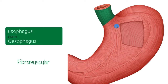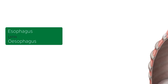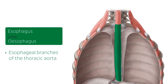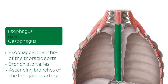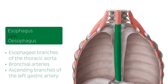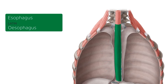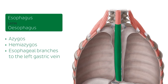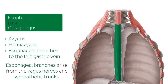Here we can see the inferior portion of the esophagus that connects to the stomach. The esophagus is supplied by the esophageal branches of the thoracic aorta. It's also supplied by the bronchial arteries and the ascending branches of the left gastric artery. The venous drainage is provided by small vessels returning blood to the azygos and hemiazygos veins and by the esophageal branches to the left gastric vein.